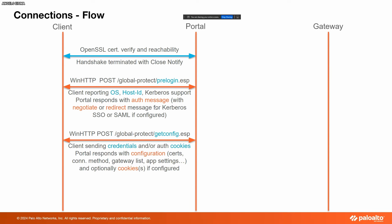The client will either respond to the authentication message with an authentication cookie or by sending its credentials. Take note of this part of the POST message — it indicates the connection between the client and the portal, and this part indicates the pre-login to the portal. Once the pre-login is complete, there will be a getconfig POST message wherein the client sends its credentials or auth cookies. The portal responds with its configuration, certificate, connection method, gateway list, and app settings.